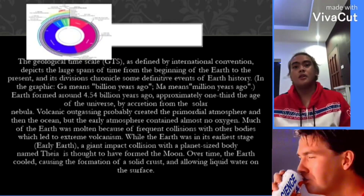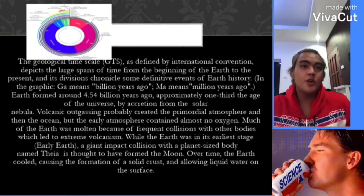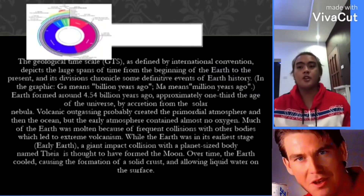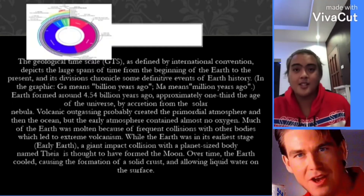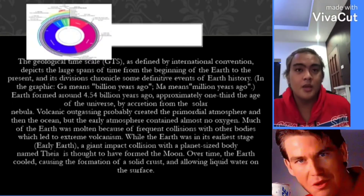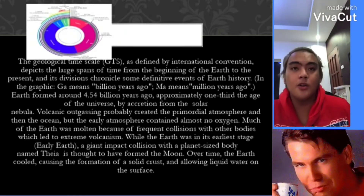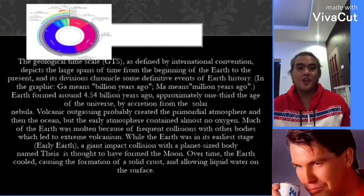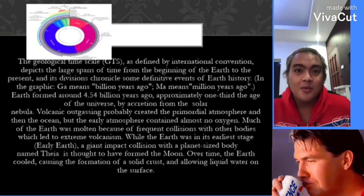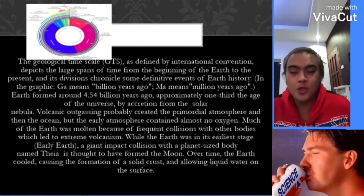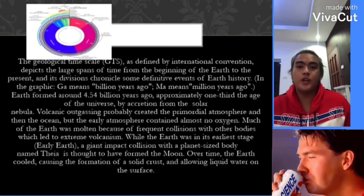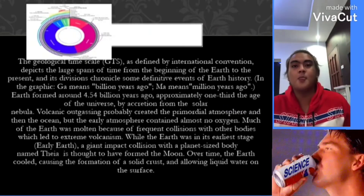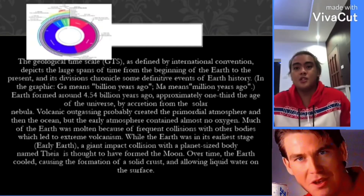A billion years ago — Ma means million years ago — Earth formed around 4.54 billion years ago, approximately by accretion from the solar nebula. Volcanic outgassing probably created the primordial atmosphere and then the ocean, but the early atmosphere contained almost no oxygen. Much of the Earth was molten because of frequent collisions with other bodies, which led to extreme volcanism.